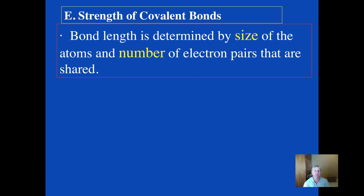Now the strength of the bond is also something that we can measure. The length of the bond is determined by how big the atoms are and the number of electron pairs that they share. The greater the number of multiple bonds then the shorter the bond length.